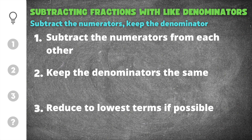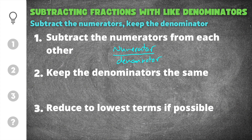The first step for subtracting fractions with the same denominator is to subtract the numerators from each other. Fractions have two parts: a numerator, which is the number written on top of the fraction, and it is being divided by the denominator, which is the number on the bottom. So when you subtract, you're going to subtract the numbers on top, which are the numerators, and you'll keep the denominator the same.